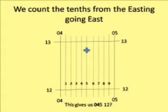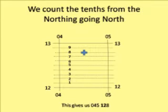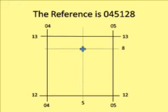So in this instance, 4.5 tenths across and then 2.8 tenths up. The grid reference is 274528 — that is, 0, 4, 5 on the easting and 1, 2, 8 on the northing.